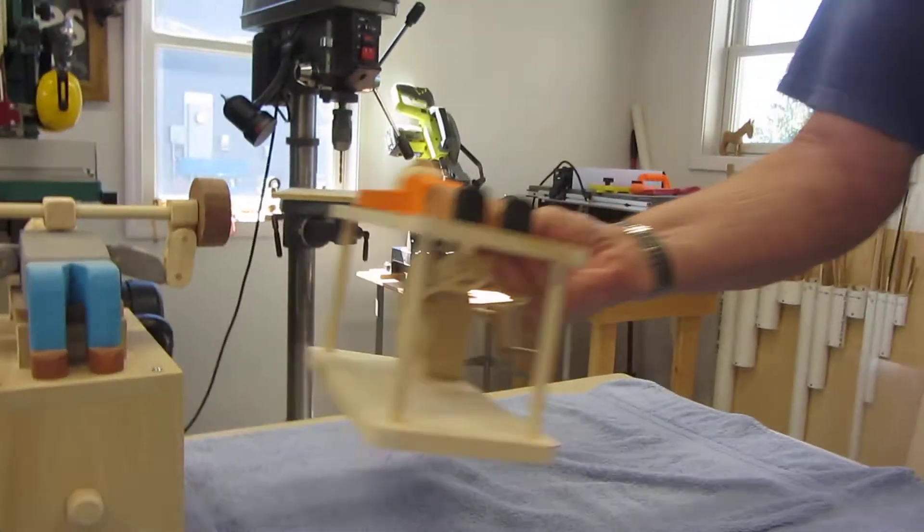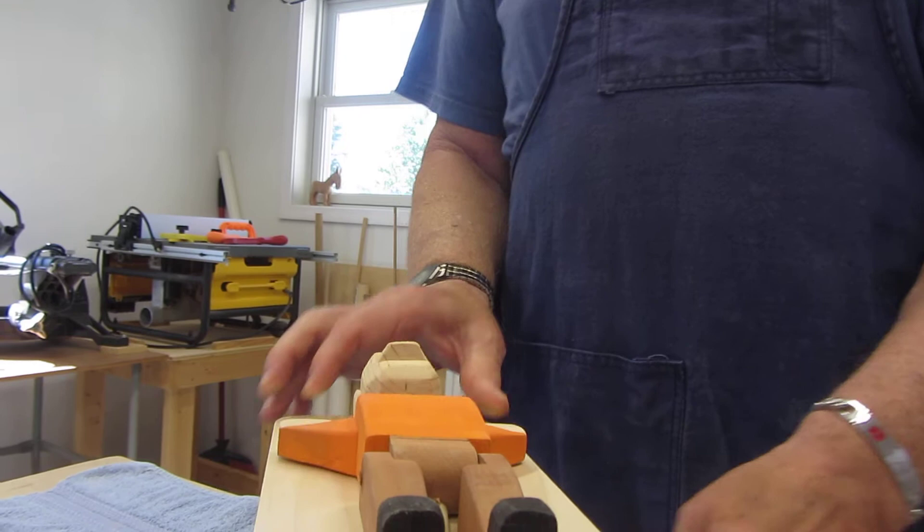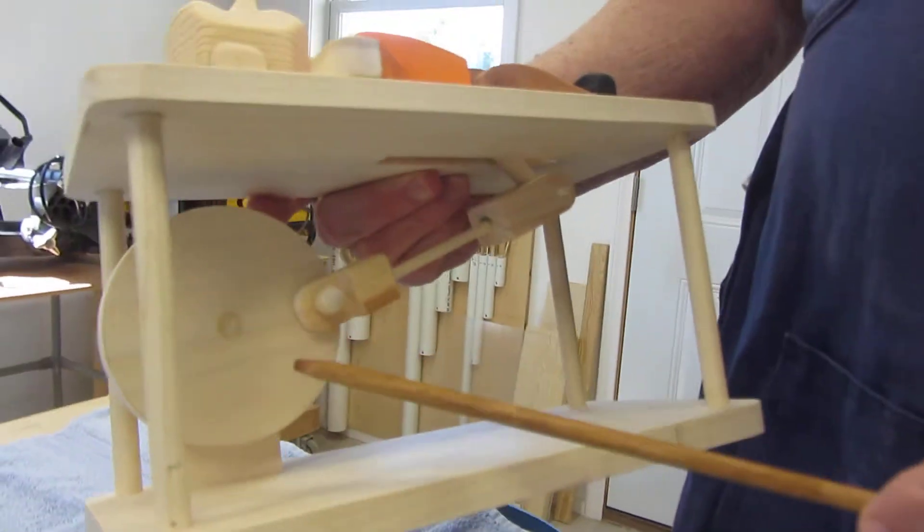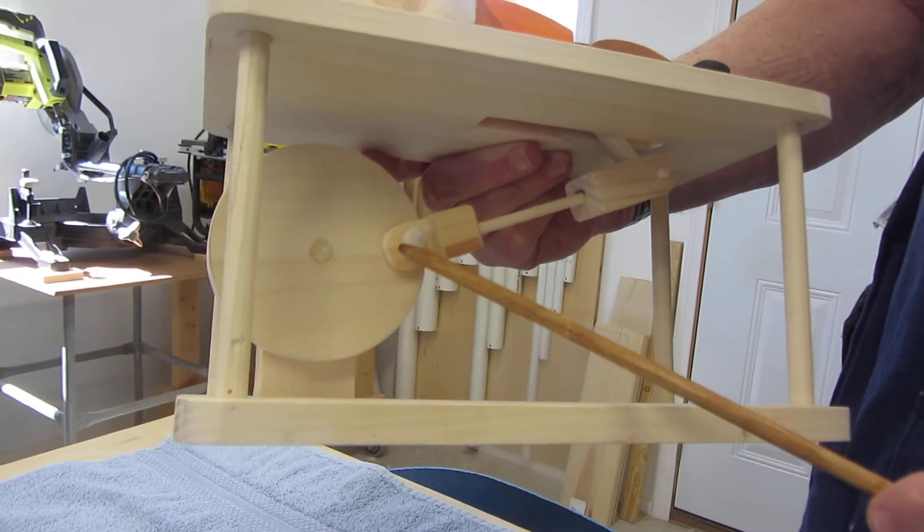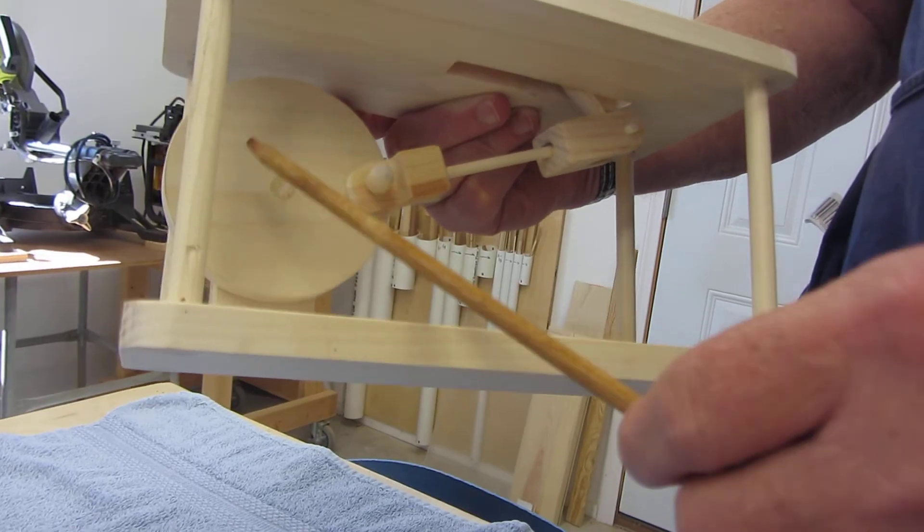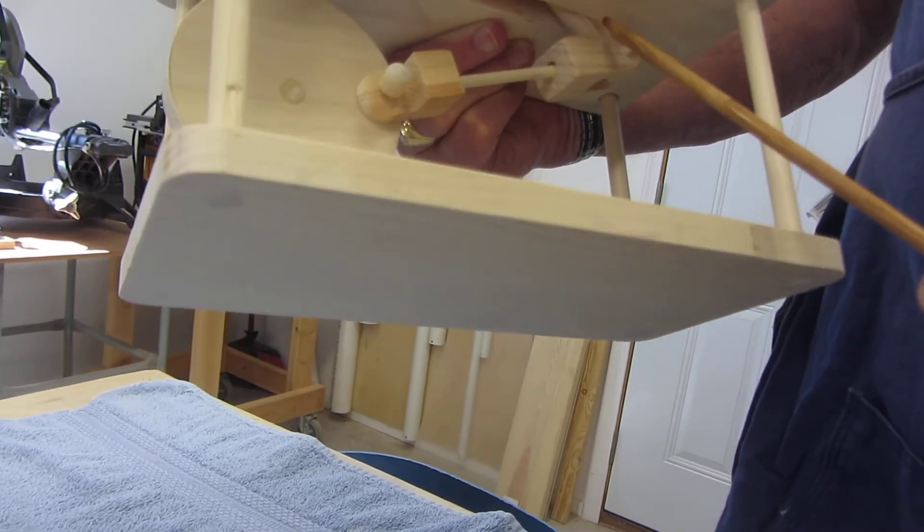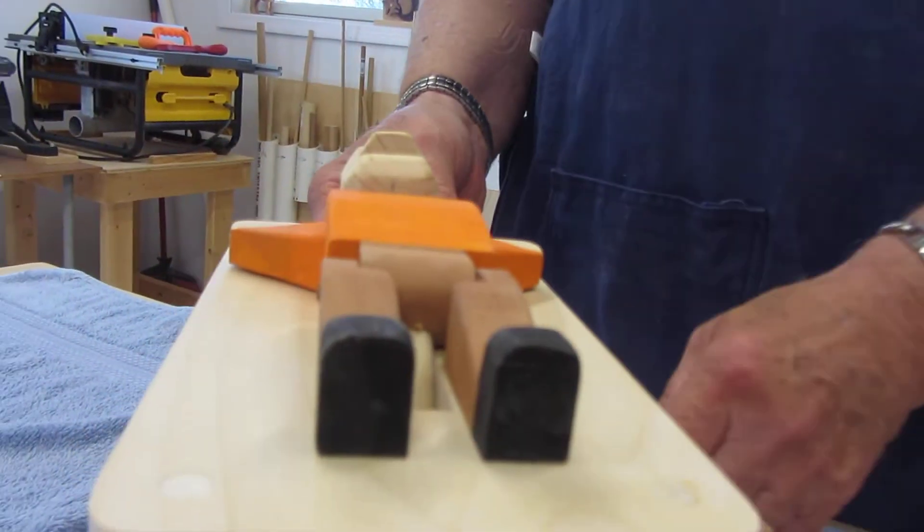Now moving along to the sit-up guy. This is a little different operation underneath here. Here we have an offset cam. We've got a pin over here on the side and that pin as it rotates around, pulls the shaft back and forth, pulling this bar down which is connected to the chest of the action figure.